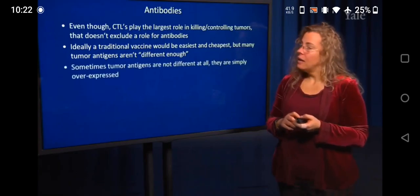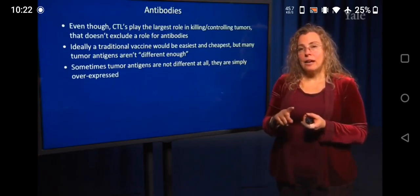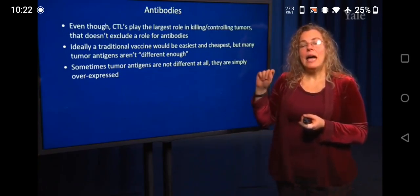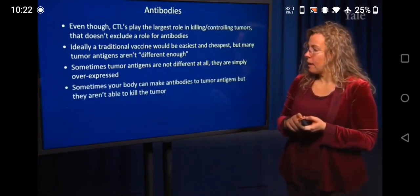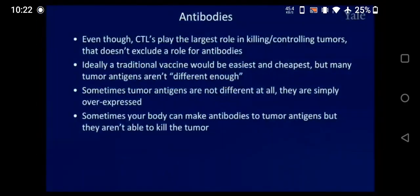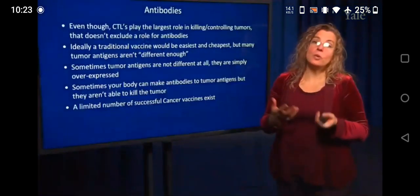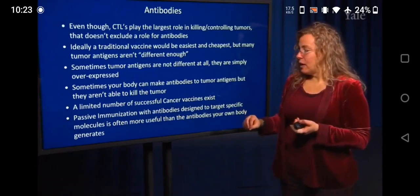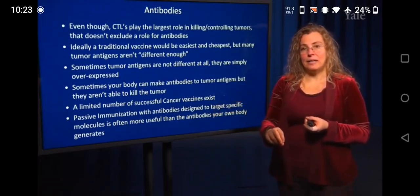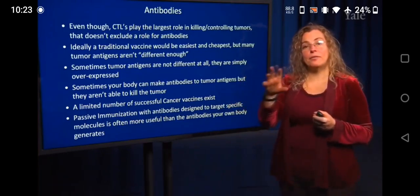If antigens are simply overexpressed, although the T cell could recognize too much expression of the antigen on MHC as foreign, a B cell could never recognize too much antigen as foreign — because T and B cells see antigen differently. Even if your body makes antibodies to a tumor, they may not actually work to kill. We do have a limited number of cancer vaccines, but not a lot for all of these reasons. However, the biggest role for antibodies in cancer is with passive immunization, and usually it's not that the antibody is directly killing the tumor.